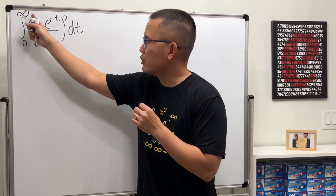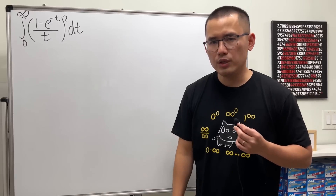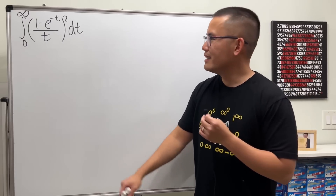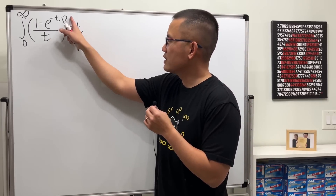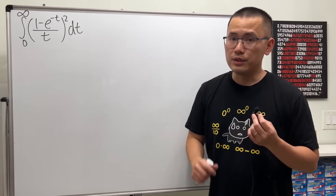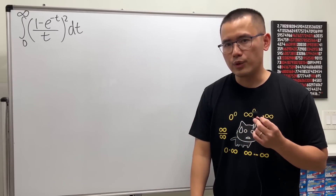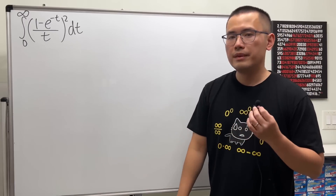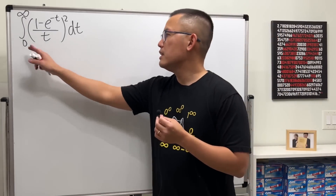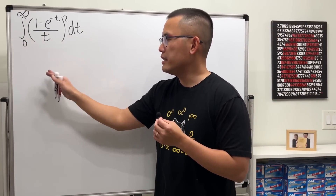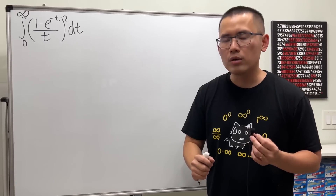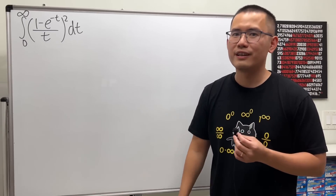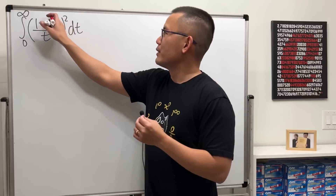This is the integral going from zero to infinity, so maybe we can use the famous technique of differentiation under the integral sign — but that's not what I did, because on the bottom we have t squared. If you did use that technique, leave a comment and let me know how it goes. What I did was turn this integral into a double integral, and if that double integral is nice enough, we can just compute it.